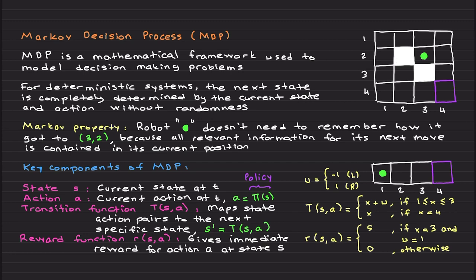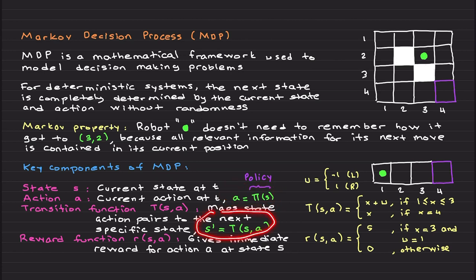You can generalize this to a two-dimensional setting and include, for example, obstacles — hitting an obstacle gives minus 5 reward, reaching the terminal state maybe 10. We discussed this in the previous video. Basically, the action with the policy and the transition function, along with the reward function, are the most important components of a Markov Decision Process.